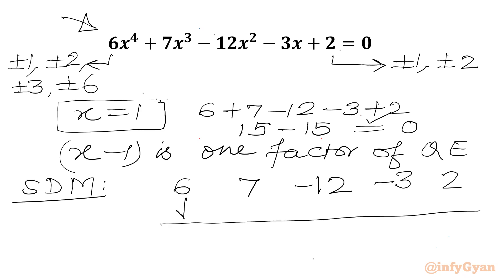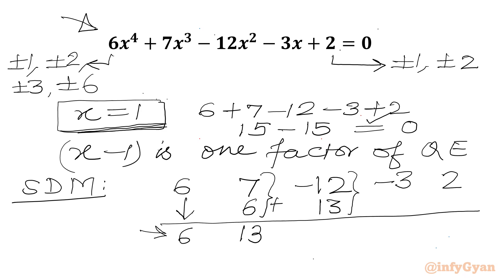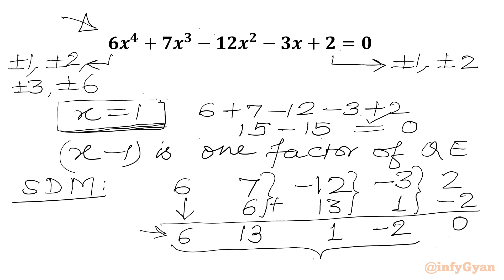We write the leading coefficient 6 as it is. We multiply our base solution 1 by 6 to get 6, and write it here. Adding 7 + 6 gives 13. Then 1 × 13 = 13; adding gives 1. Then 1 × 1 = 1; adding gives −2. Then 1 × (−2) = −2; addition gives 0.